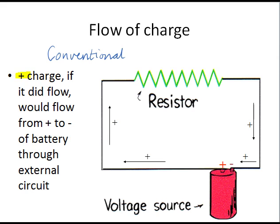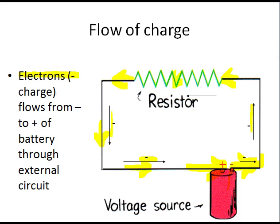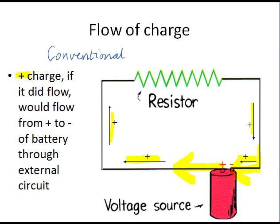And so actually we take current's direction as being the direction that positive charges would flow, even though, of course, we know that it's not the positive charges that flow. And so we draw the flow of current as being from the positive terminal of the battery around into the negative terminal of the battery. So notice that electron flow and what we call current flow are in exactly the opposite direction. And don't let that confuse you.